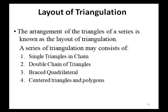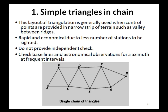Layout of triangulation: the arrangement of the triangles of a series is known as the layout of triangulation. A series of triangulation may consist of: (1) single triangles in a chain, (2) double chain of triangles, (3) braced quadrilateral, and (4) centered triangles and polygons. Simple triangles in a chain: this layout is generally used when control points are provided in a narrow strip of terrain such as a valley. It is rapid and economical due to fewer stations, but does not provide independent checks; check baselines and astronomical observations for azimuth are needed at frequent intervals.